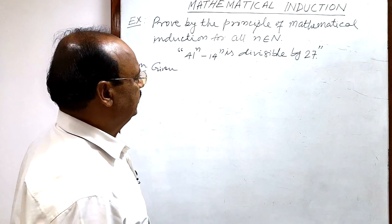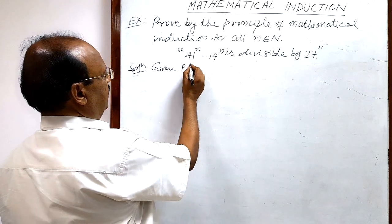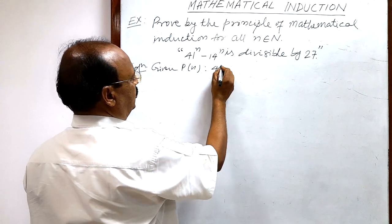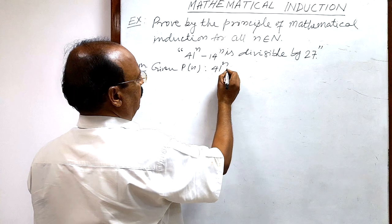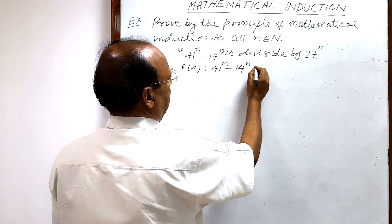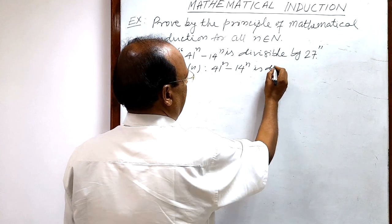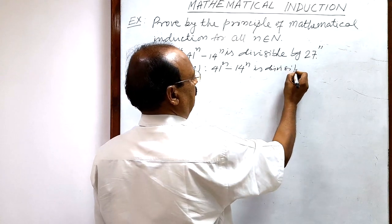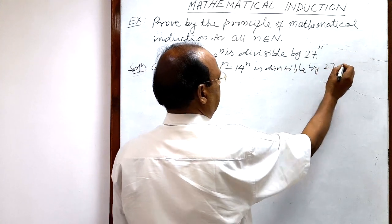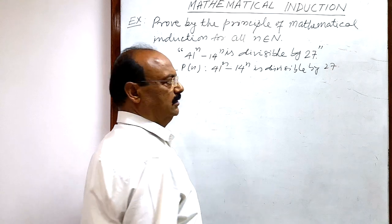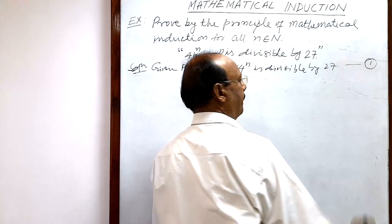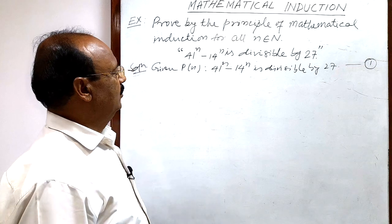As we know, a mathematical statement is denoted by P(n). So here P(n) is: 41 to the power n minus 14 to the power n is divisible by 27. Suppose this is relation number one.